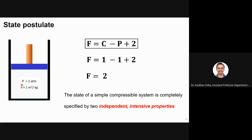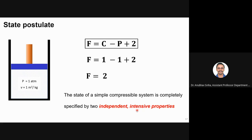If I know only one property, like pressure, the system state is not fixed — it could have any temperature or volume. But if I know both pressure and specific volume, I also fix the temperature and density. A student asks if volume is intensive — the answer is that it is specific volume being used here. If using extensive volume, you also need to know the mass. Specific volume is intensive.